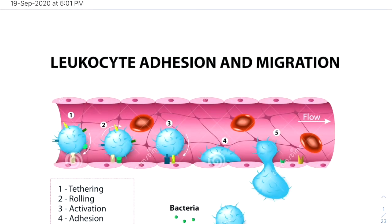Welcome back. This month I started a lecture series in immunology, and in the last few lectures I covered the basics of immunology. In this lecture I will be covering the process of leukocyte adhesion and migration. The circulating blood leukocytes require to migrate to the sites of tissue injury and infection.